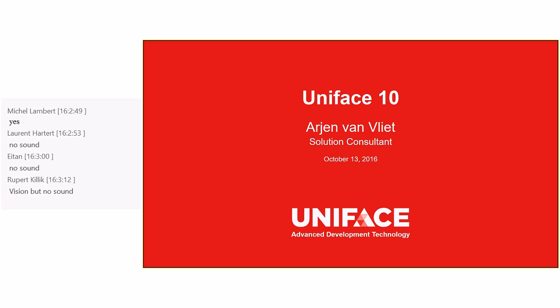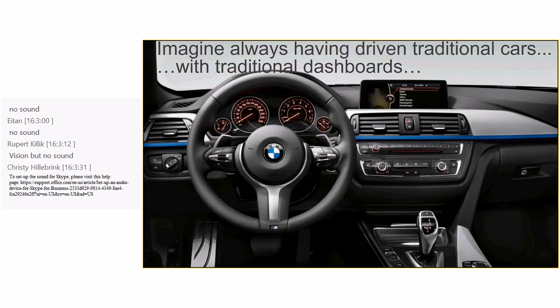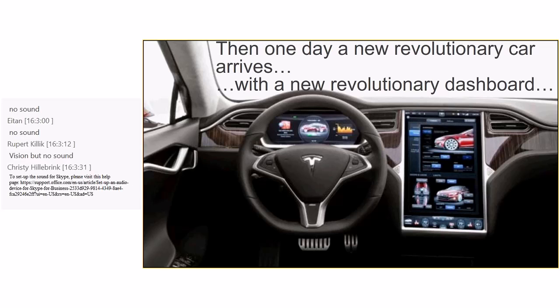I'd like to pick your imagination for a little while by starting with this slide. Imagine having always driven traditional cars with traditional dashboards like the one in the picture — two big dials in front of you, two smaller dials, a steering wheel, a center console with your entertainment, your radio, your heater, etc. Wonderful car, works fine. Driven it for years. Fantastic.